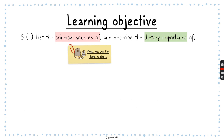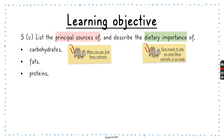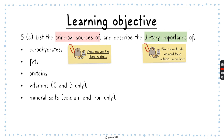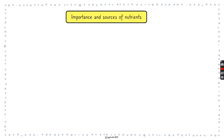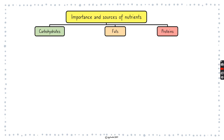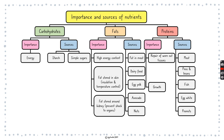We're supposed to describe the dietary importance, which is giving reasons why we need these nutrients in our body. So we have to look at carbohydrates, fats, proteins, vitamins C and D only, mineral salts calcium and iron only, fiber like roughage, and water. So what are the importance and sources of these nutrients — carbohydrates, fats, and proteins?